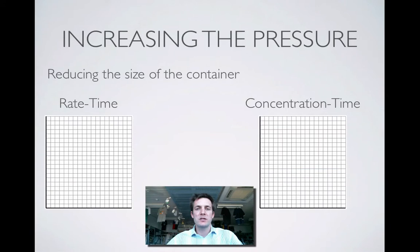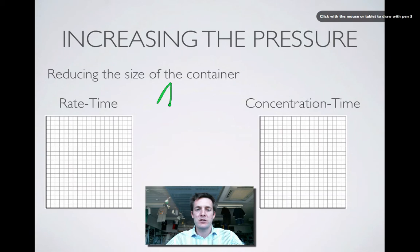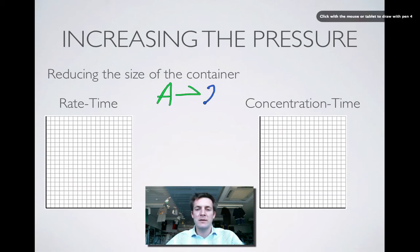We're going to start off by increasing the pressure, and we're going to do this by reducing the size of the container. Whatever box this reaction is happening in, we're compressing it, making it smaller, so that everything's happening in a smaller space. Let's imagine a reaction system where A turns into 2B in the forward process, and in the backward process 2B is turning back into A.